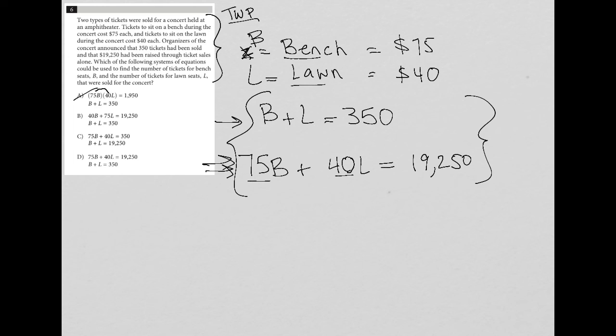For choice B, we have 40 times B, but really that should be 40 times L. So that's out.